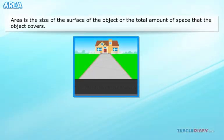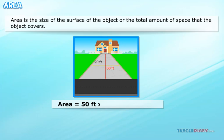Your parents are getting their driveway paved. We need to find the area of the driveway. Area equals 50 feet times 20 feet equals 1,000 square feet.